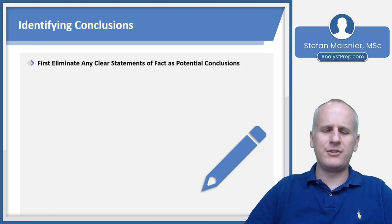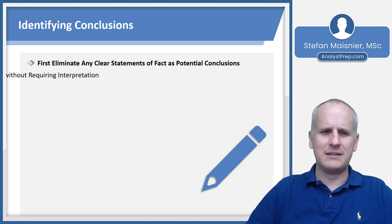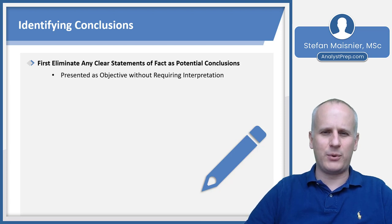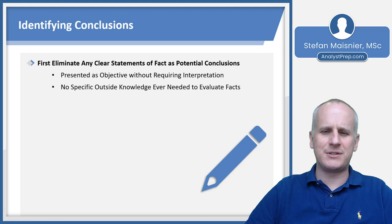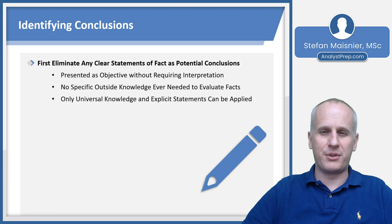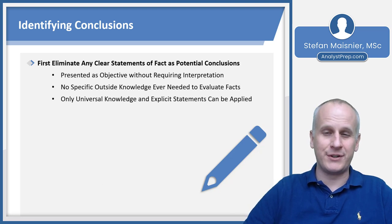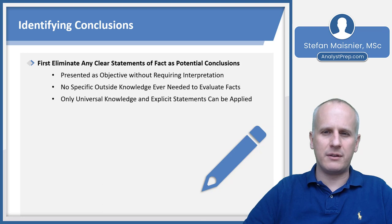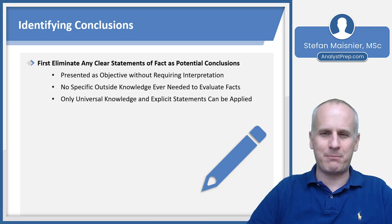How do we identify a conclusion? First, eliminate from consideration any clear statements of fact, because if a statement is presented as objective without any interpretation required, it can't be your conclusion — it doesn't need further support. You should never feel you need outside knowledge to evaluate the facts in any critical reasoning prompt. Only universal knowledge and explicit statements can be applied. Universal knowledge means things true all around the globe — like 'if you try to breathe water, you will drown' or 'Earth has one moon.' Freedom of speech being part of a democracy would not be universal knowledge.